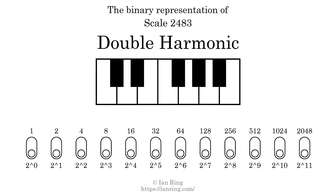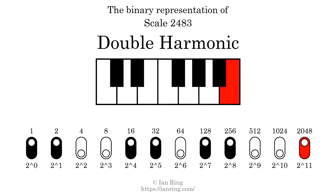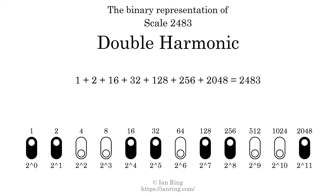The binary representation of this scale is determined by mapping tones of the scale to binary digits. Each binary digit represents a power of 2. To get the scale number, we add the powers of 2 together. The powers of 2 that are present in the scale, all added together, equals 2483. That is why the scale number, in decimal, is 2483.